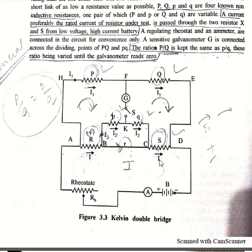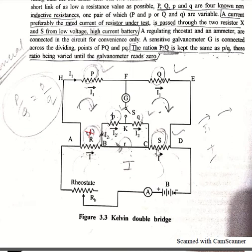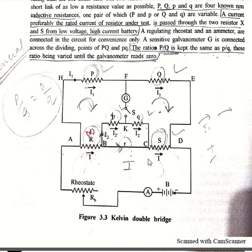Now coming to the diagram of this Kelvin Double Bridge method. In this diagram we have X, which is the resistor under test, and S is the standard resistance. As in our previous case of potentiometer, we have two conditions: the resistance of S should be of the order of the resistance under test, and the second condition is its current rating should be the same or of higher current rating than resistance X. These two resistors X and S are connected in series with a short link.